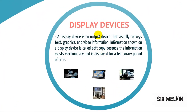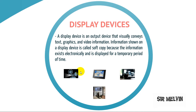Display devices are output devices that visually convey text, graphics, and video information. Information shown on a display device is called soft copy because the information exists electronically and is displayed for a temporary period of time, such as in film or video. Examples include monitors and GPS displays.